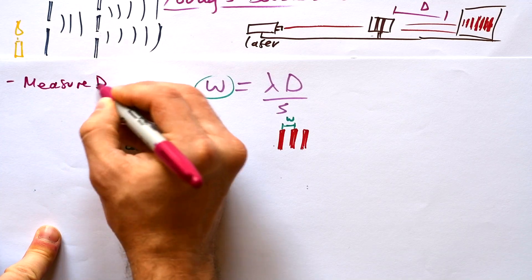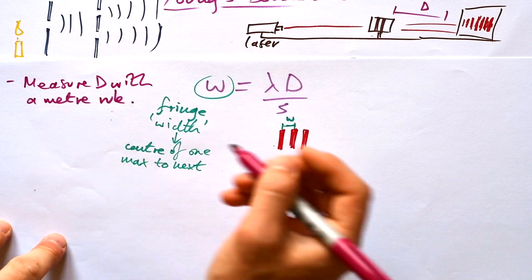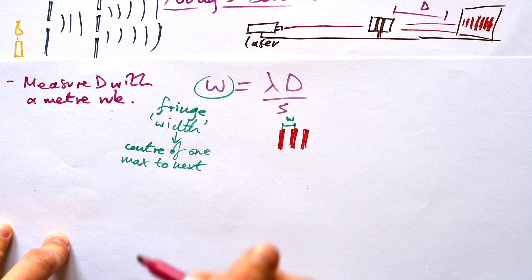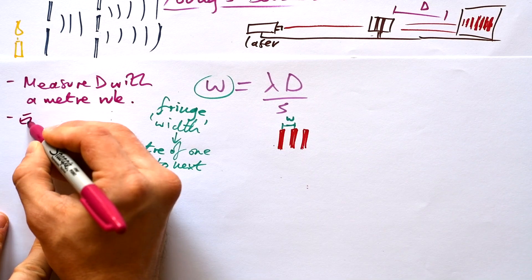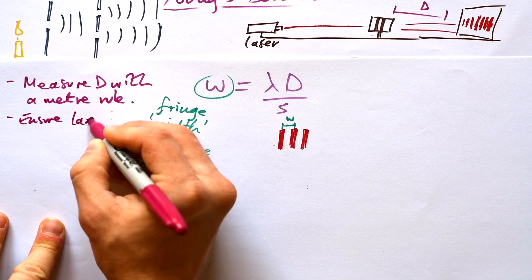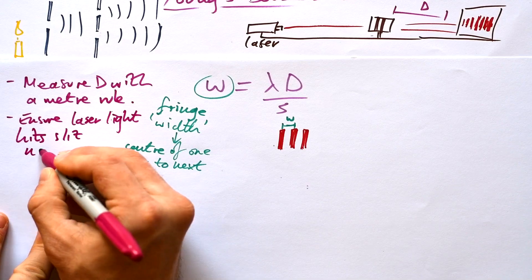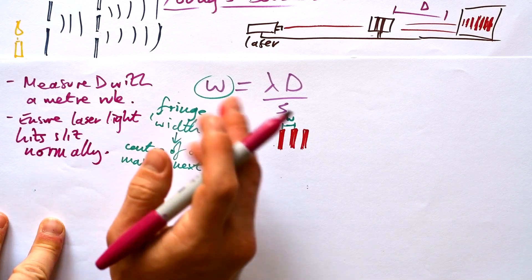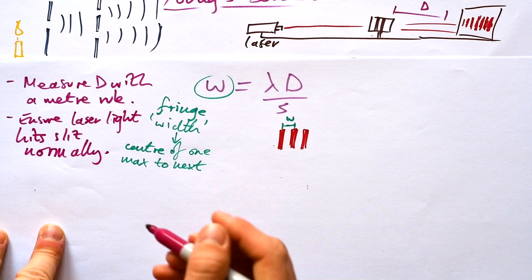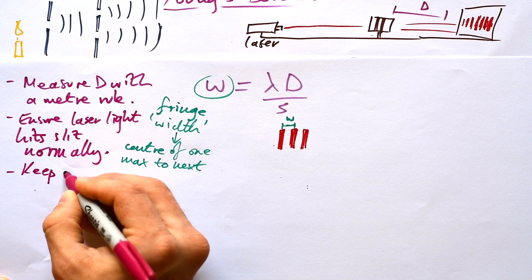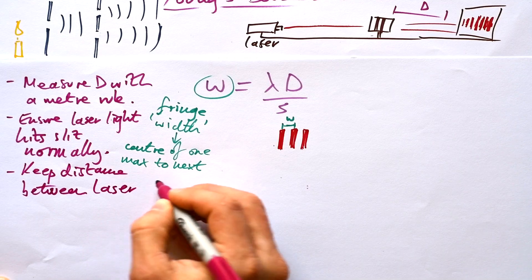So we're going to measure D with a meter rule and that is the distance between the slits and the screen not the laser and the slits. What are we going to ensure? Ensure laser light hits slits normally. In other words it hits it bang on. We don't want to hit it at an angle otherwise our diffraction pattern is going to be skewed. And it is also a good idea to keep the distance between the laser and the slit constant.